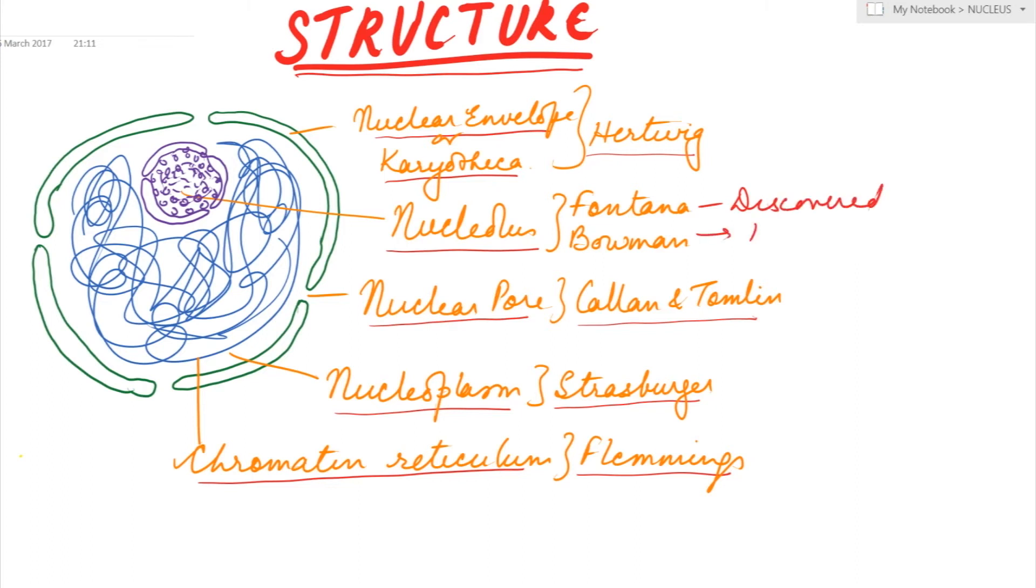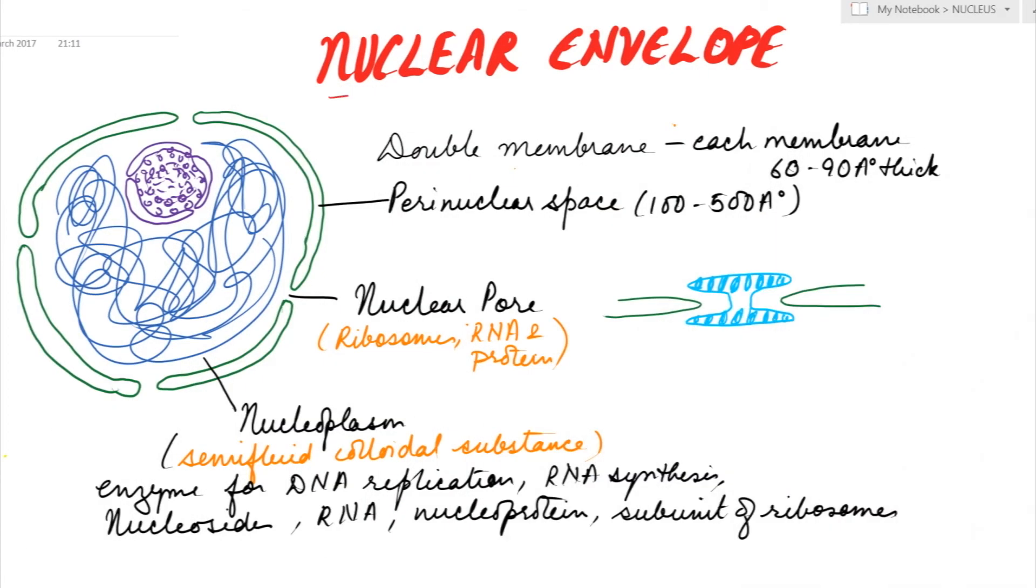Nuclear envelope is a double membrane structure with outer and inner membrane, each 60 to 90 angstrom thick. The nuclear envelope encloses a perinuclear space which is about 100 to 500 angstrom.